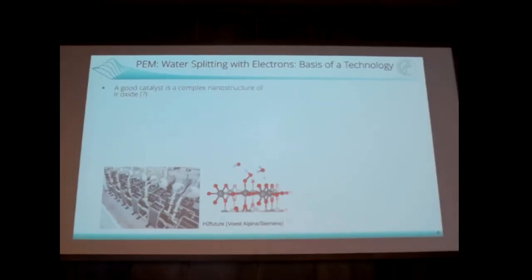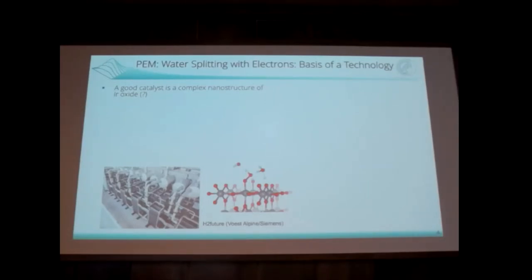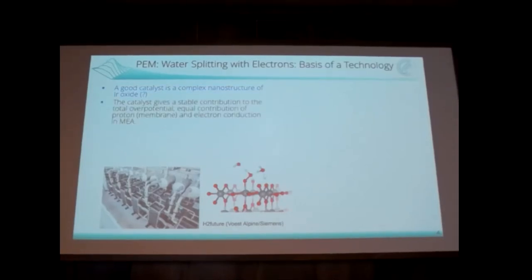What we learn from practice is that a good catalyst is a complex nanostructure of iridium oxide. The worst catalyst you can make is bulk iridium oxide. You crystallize it, make a perfect crystal, look at the X-ray diffraction, get a quantitative analysis of IrO₂, and the reactivity in OER is zero — completely inactive. That means the catalytic activity is not an intrinsic property of IrO₂, but an extrinsic property of the defect structure of IrO₂. That's not the same thing.